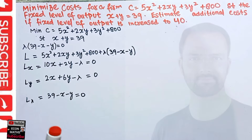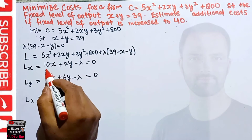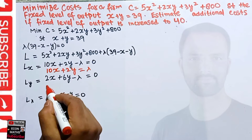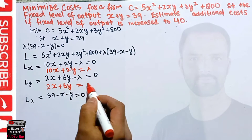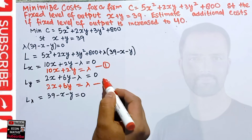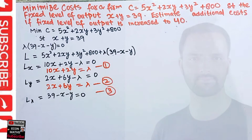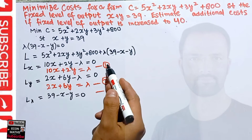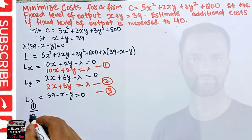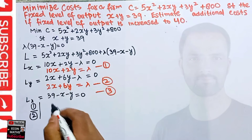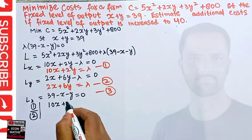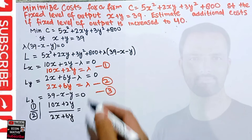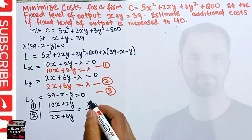Now rearranging, from equation one: 10x + 2y = λ. From equation two: 2x + 6y = λ. Let these be equation 1, equation 2, and equation 3. To find the optimal values of x and y, we divide equation one by equation two. So we have (10x + 2y) / (2x + 6y). On the right side, λ/λ cancels to give 1.